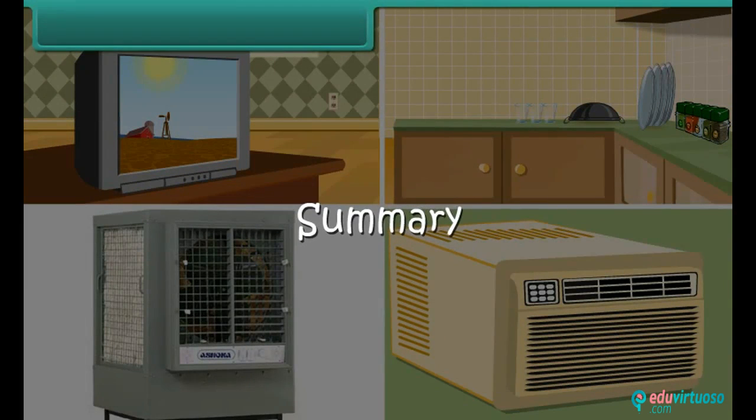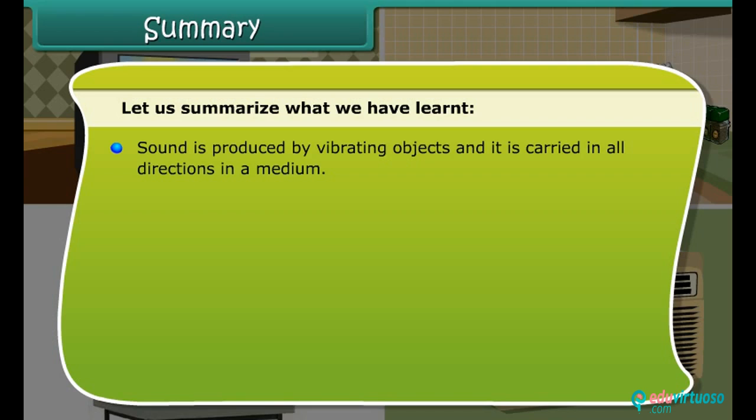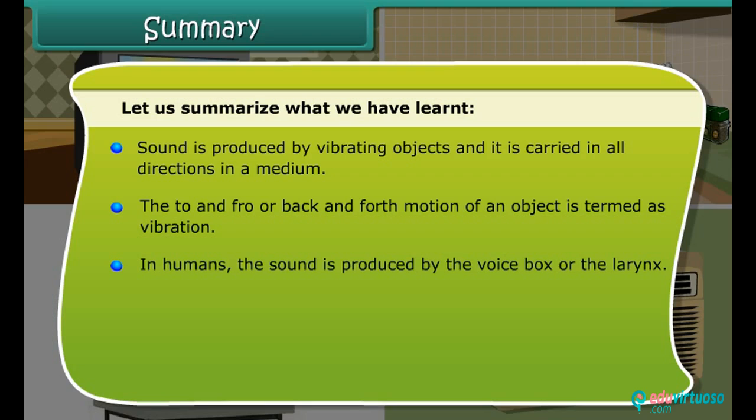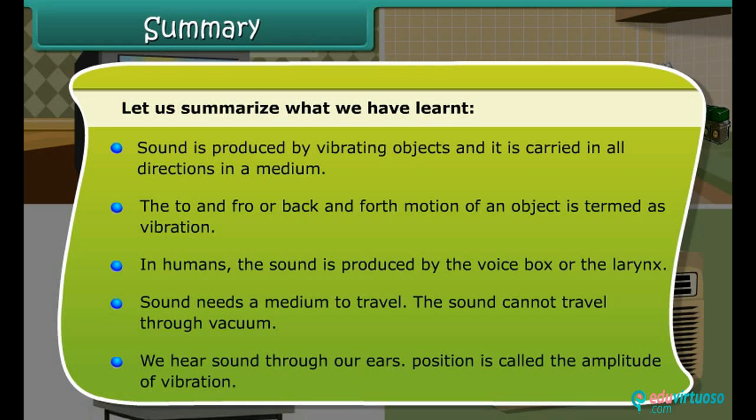Summary. Let us summarize what we have learned. Sound is produced by vibrating objects and it is carried in all directions in a medium. The to and fro or back and forth motion of an object is termed as vibration. In humans, the sound is produced by the voice box or the larynx. Sound needs a medium to travel. The sound cannot travel through vacuum. We hear sound through our ears. Position is called the amplitude of vibration.